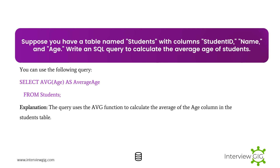Next Scenario: Suppose you have a table named Students with columns Student ID, Name, and Age. Write an SQL query to calculate the average age of students. The query uses the AVG function to calculate the average of the Age column in the Students table.